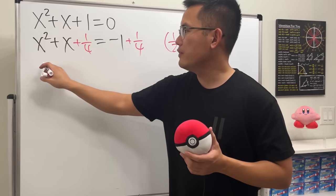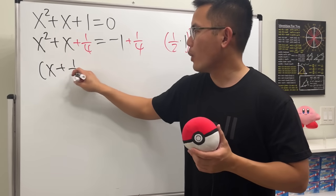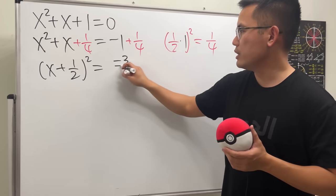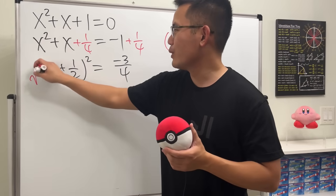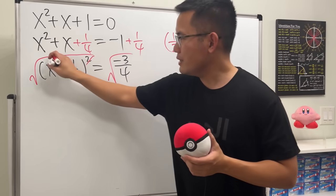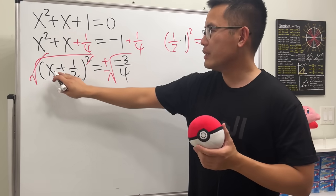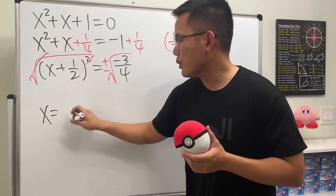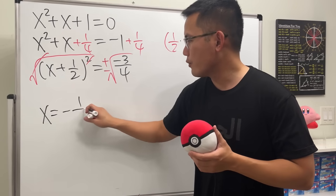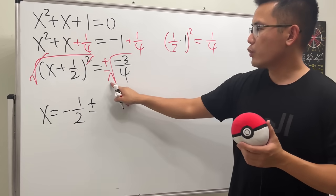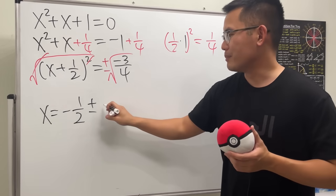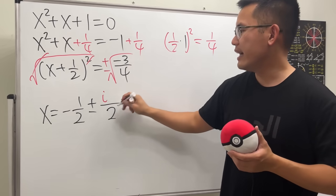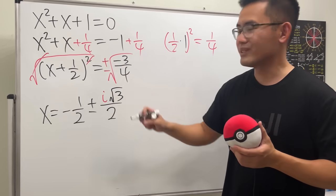The left-hand side gives us x plus one half, squared. The right-hand side gives us negative three over four. We take the square root on both sides, giving us x plus one half equals plus or minus the square root of negative three over four. Moving the one half over, x equals negative one over two plus or minus i times the square root of three over two.